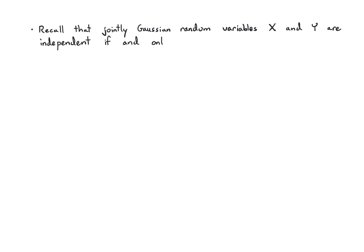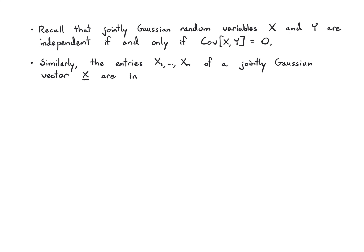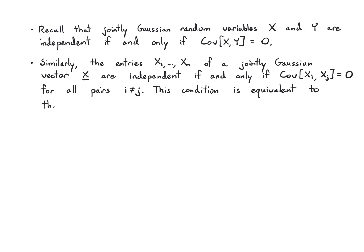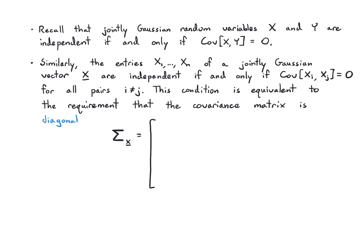Recall that a pair of jointly Gaussian random variables x and y are independent if and only if their covariance is zero — that is, they are uncorrelated. This is not true in general for random variables, but Gaussians are special: covariance equal to zero implies independence. For the entries of a Gaussian random vector, they are independent if and only if every pairwise covariance is zero. This is equivalent to the covariance matrix being diagonal, since variances appear on the diagonal and covariances appear on the off-diagonal.